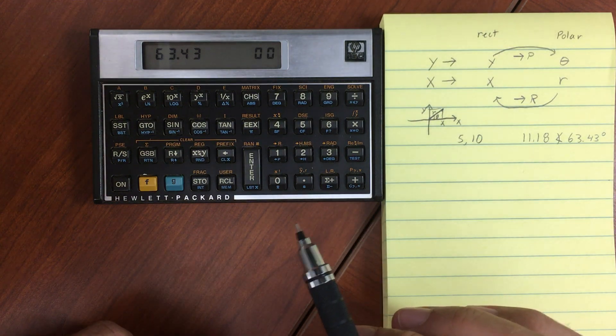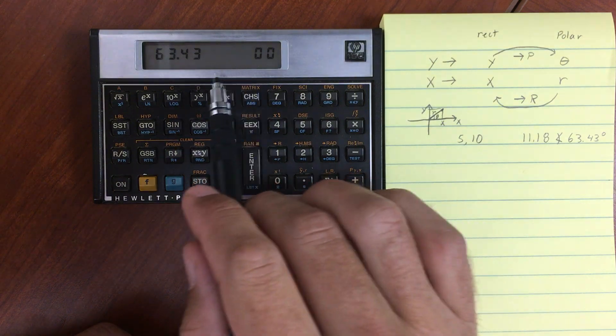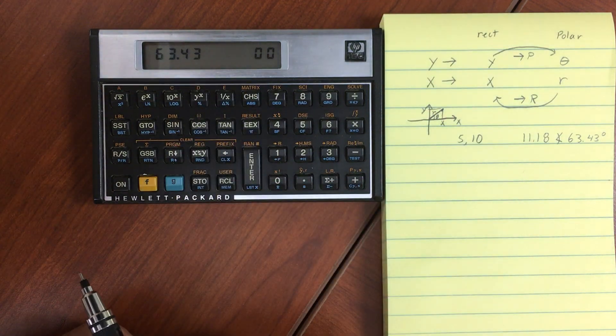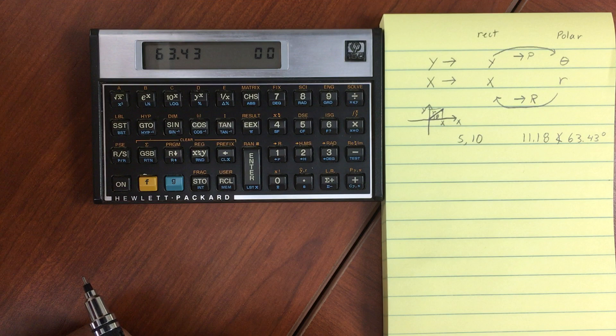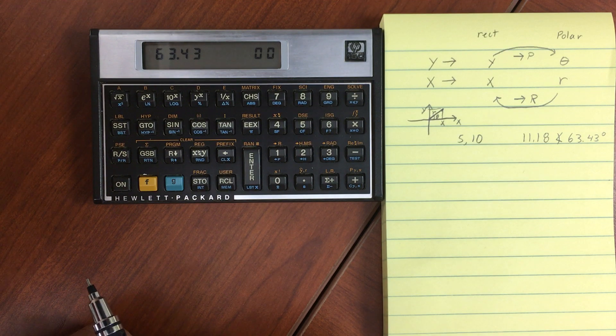Now note that since we are in degrees mode, there's no annunciator here, that the angle is showing up in degrees. If I were in radian mode, then it would be showing up in radians.